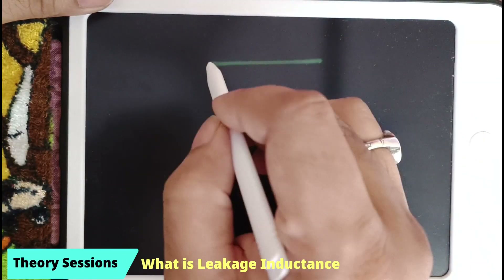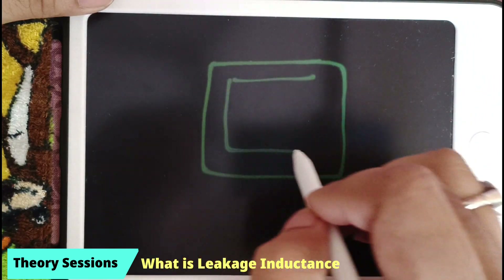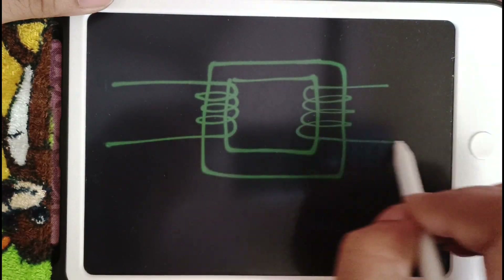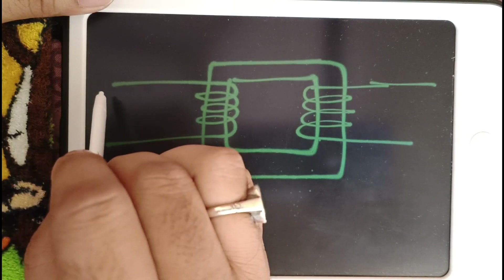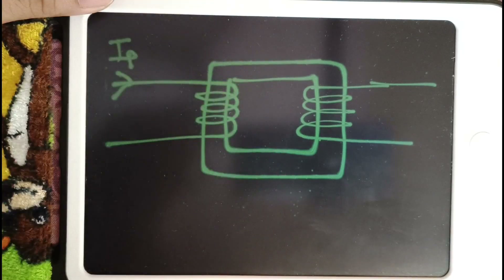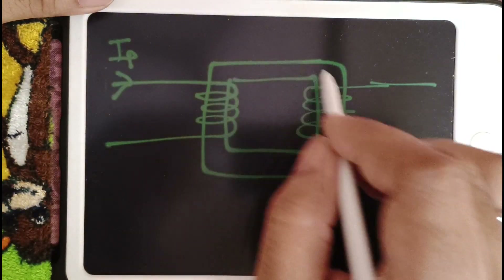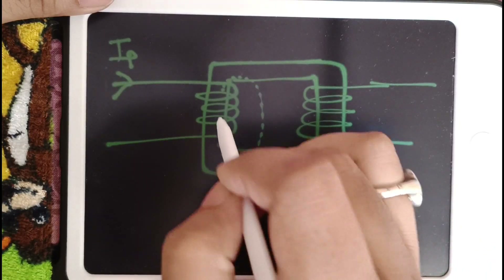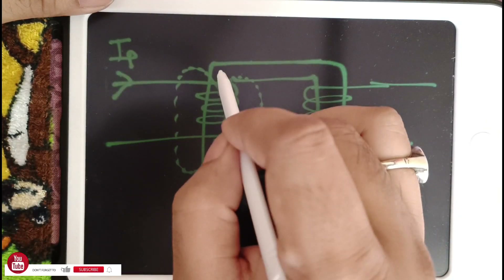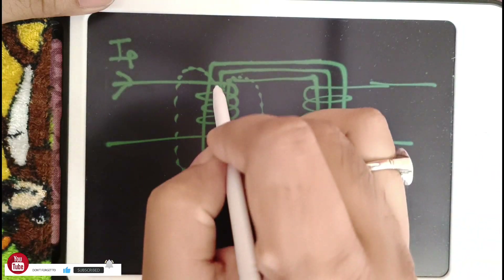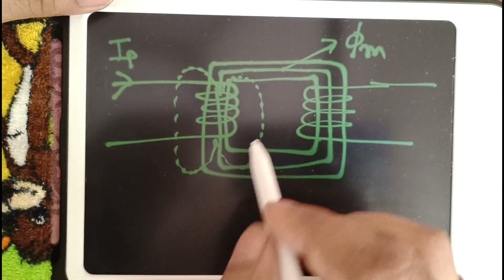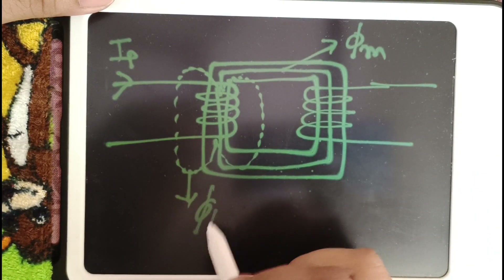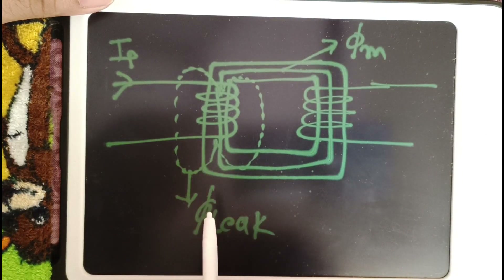Let us assume we have one transformer model. This is the transformer core and it has a primary winding and secondary winding. Whenever you apply the voltage in the primary winding, current IP will flow, and this current will produce flux in the core. Some of the flux is not traveling in the core — it is coming out to the air — and the main flux travels in the core and links with the secondary coil. This main flux is called phi main.